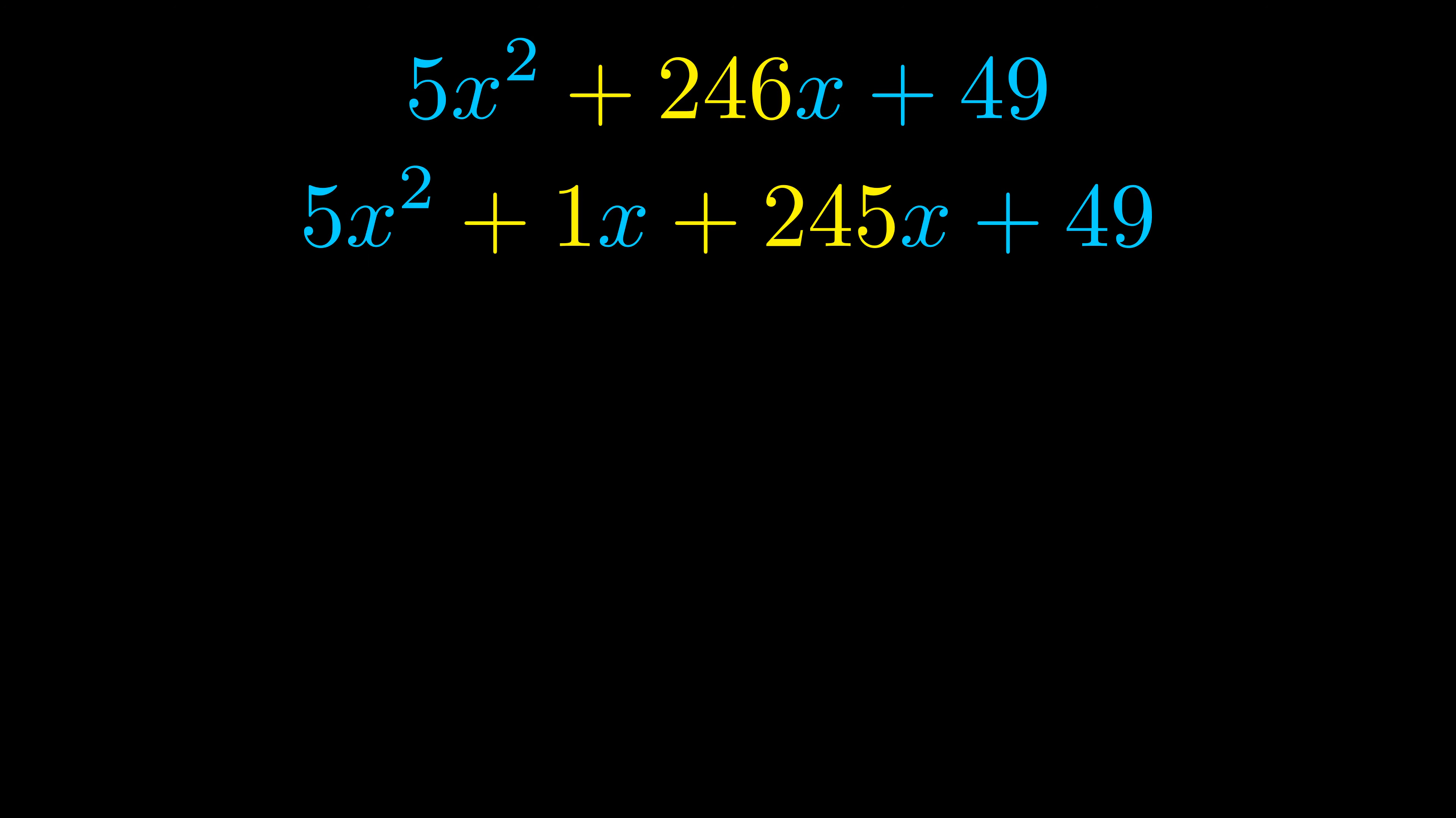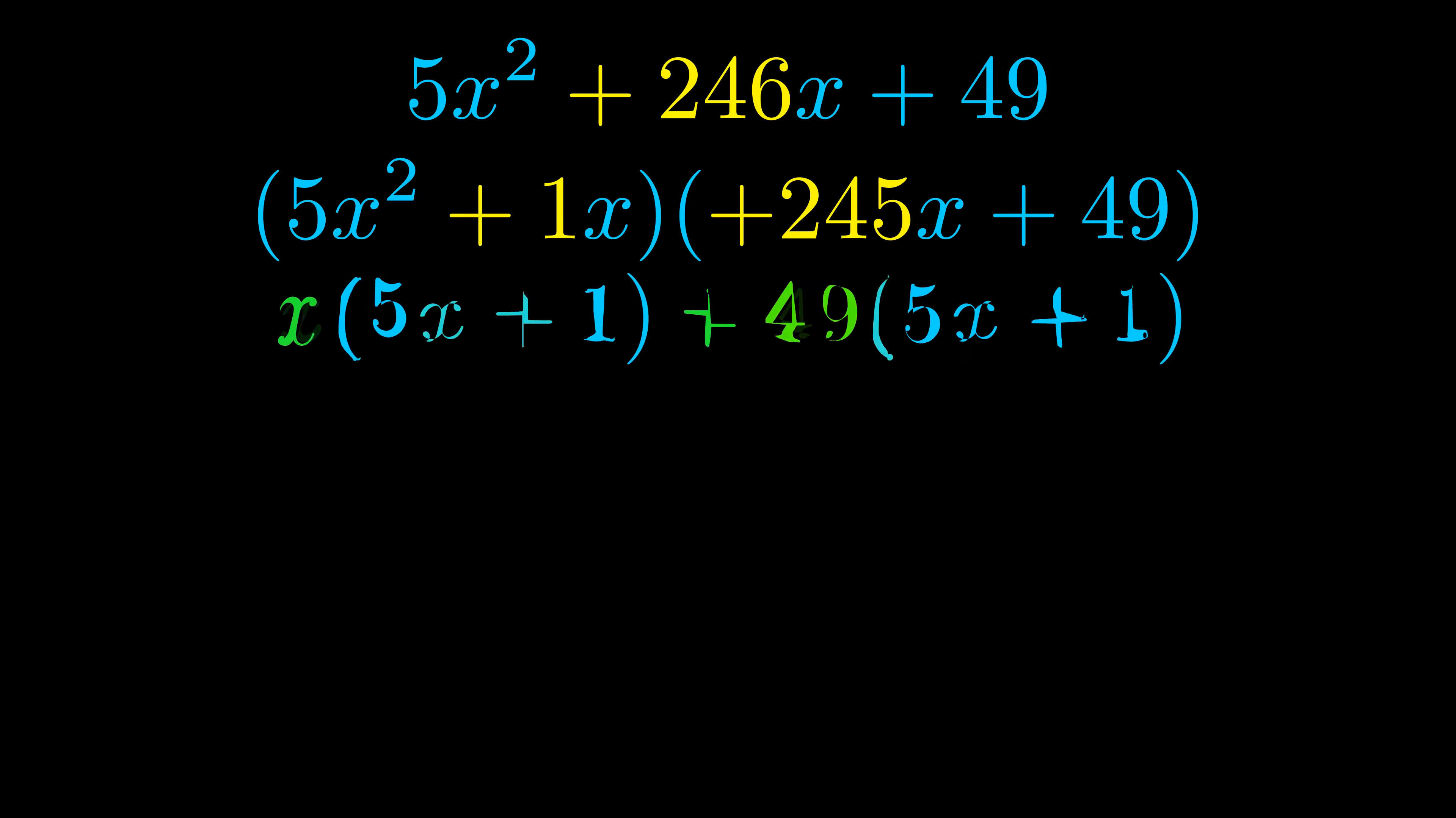Once we've done this we go ahead and we put parentheses around the first term and the last term. And we do that so that we can take the greatest common factor out of both terms. We can see the greatest common factor is now outside in green.